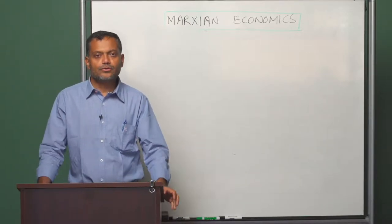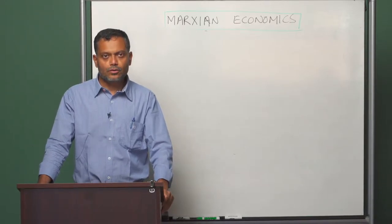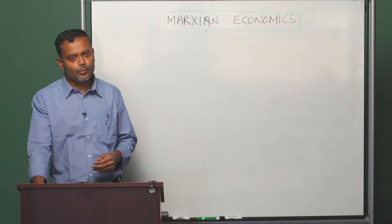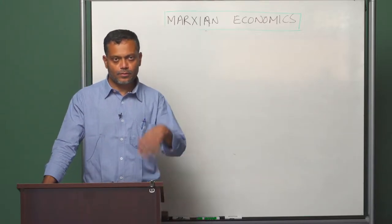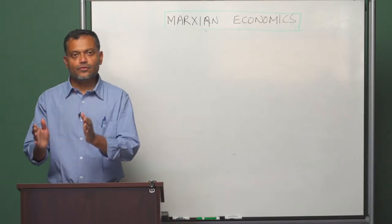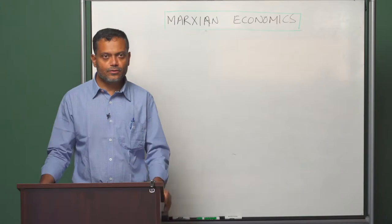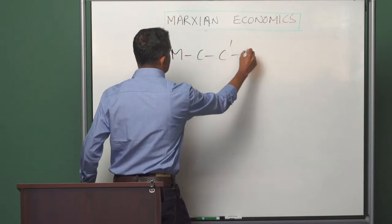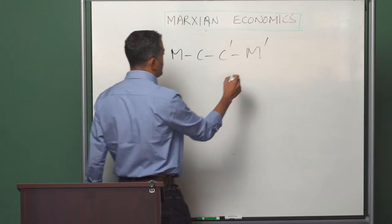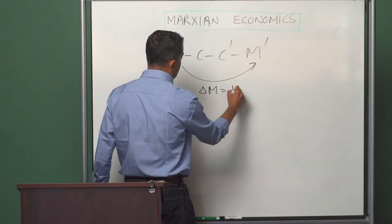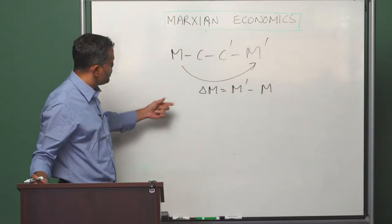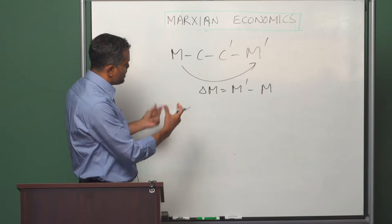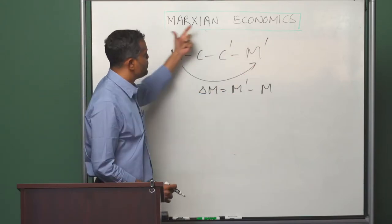In the previous sections we understood the notion of a commodity, then the notion of money, then we moved to the study of capital, and then we looked at the effect that capitalist relations of production have on the organization of the production process. We have seen that capitalism, which can be represented through the circuit of capital, is primarily interested in generating surplus value, and we have understood how this surplus value is generated.